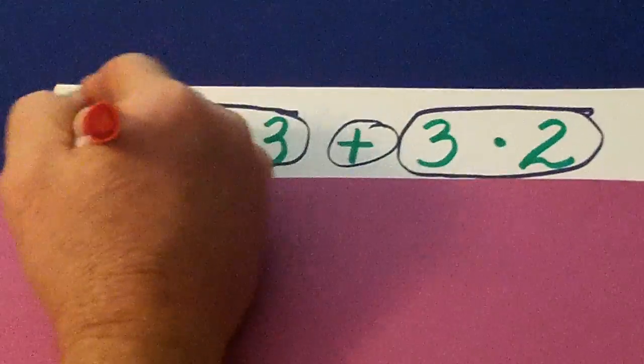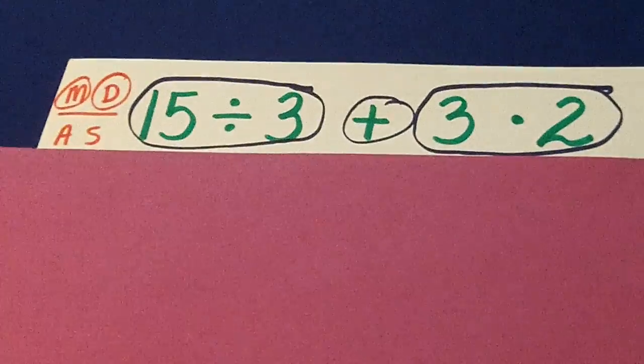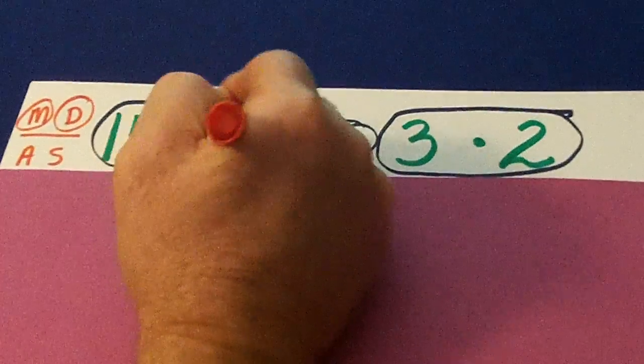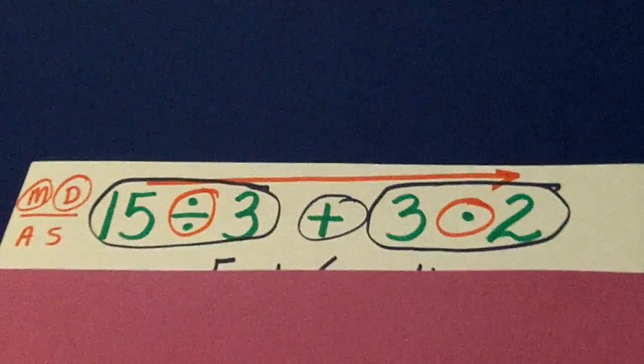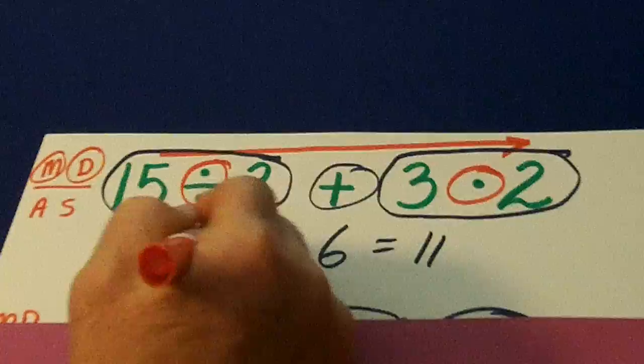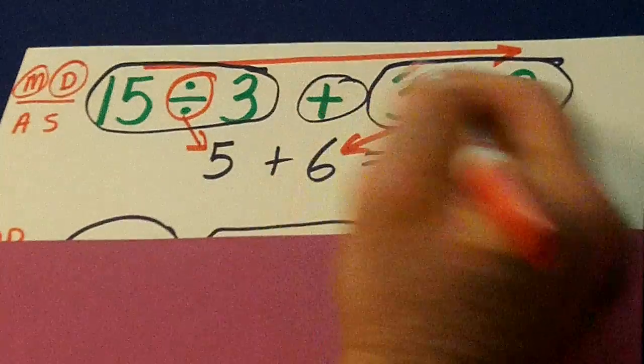And this occurred right up here also. We had division and multiplication there. This came first when we go from left to right. So we went ahead and did this first, then this next.